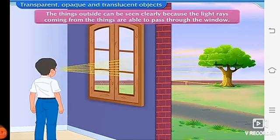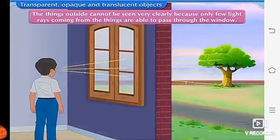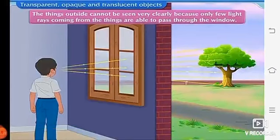Now, let us observe through the second window. Are we able to observe the things clearly? Clearly, not so much. Yes, because the things outside cannot be seen very clearly because only few light rays coming from the things are able to pass through the window.